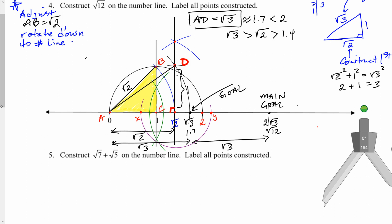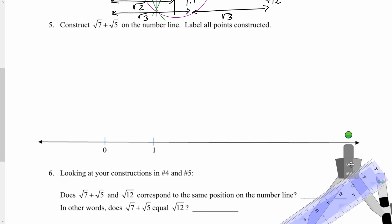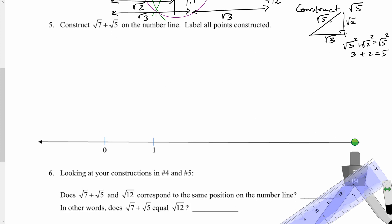There are many different ways to construct root 5. One way is to build a right triangle with side lengths root 3 and root 2 — you get root 5 as the hypotenuse because root 3 squared plus root 2 squared equals root 5 squared, and 3 plus 2 is 5. Another way is a right triangle with legs 2 and 1, since 2 squared plus 1 squared equals 5 as well. So there are at least two valid ways to construct root 5.